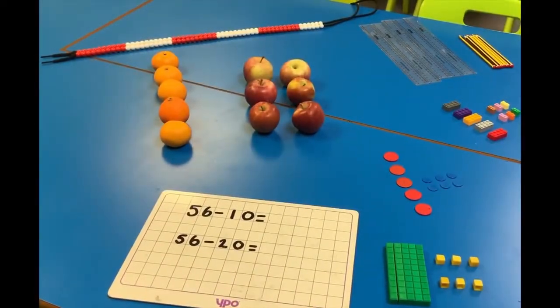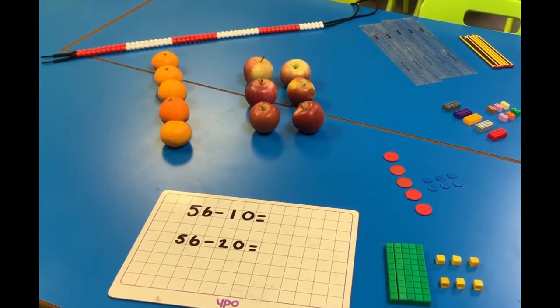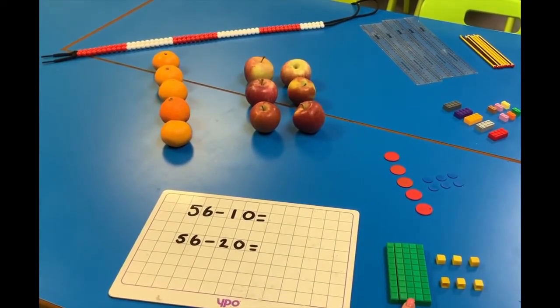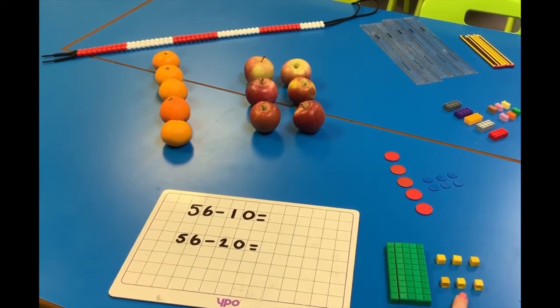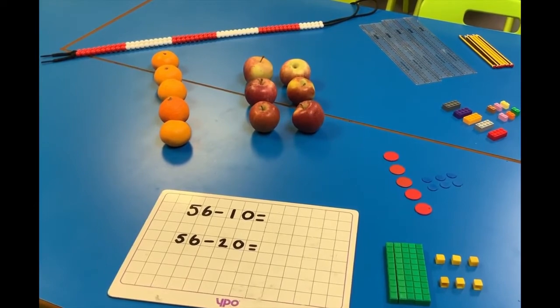Today we are looking at subtraction in year two. At the beginning of the year we start by subtracting ten. In front of me at school we use our ten sticks and our ones. We also have counters and bead strings. At home you may have Lego, pencils, rulers and fruit which you can use to help you.